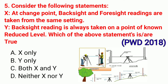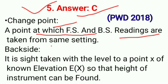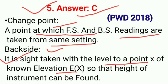Question No. 5. Consider the following statements: X — at change point, backsight and foresight readings are taken from the same sitting. Y — backsight reading is always taken on a point of known reduced level. Which of the following statements is or are true? Correct option C: Both X and Y. At a change point, foresight and backsight readings are taken from the same sitting. Backsight is the reading taken with the level to a point of known elevation so that height of instrument can be found. So correct answer C.